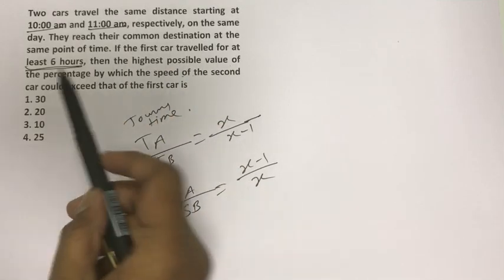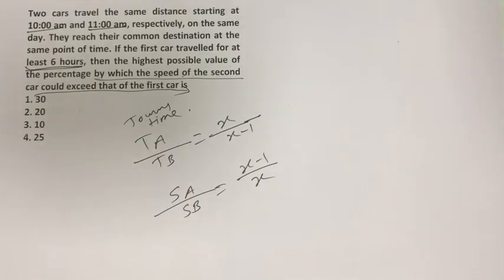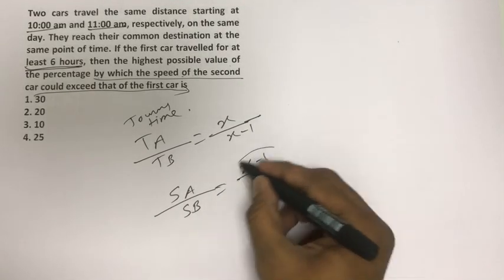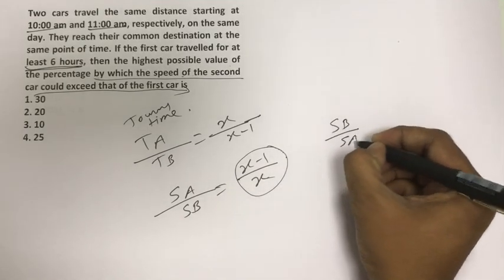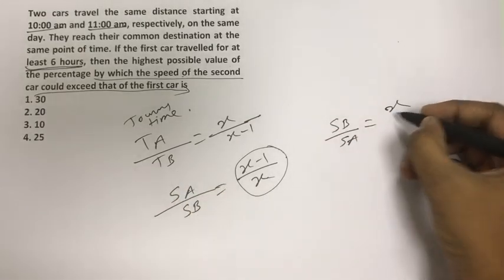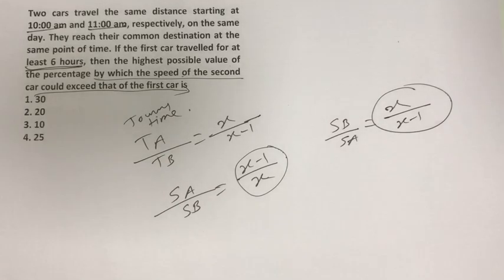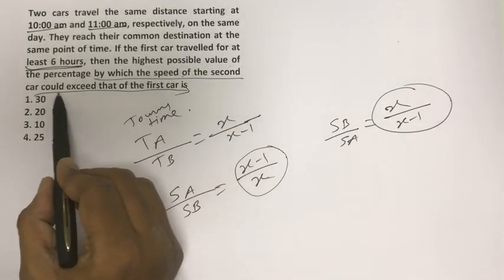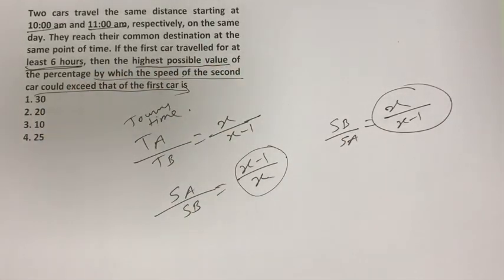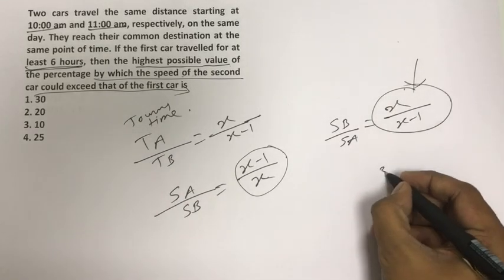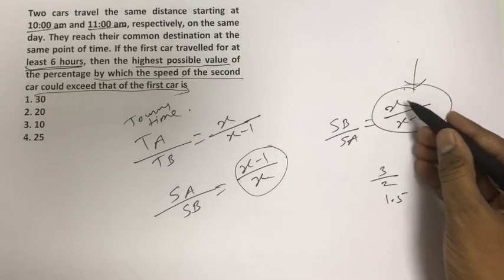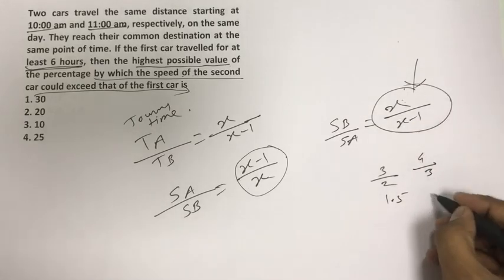What we want is the highest possible value of the percentage by which the speed of the second car could exceed the first. This means speed B divided by speed A - we have to maximize this ratio. If we take x/(x-1), for x=4 it gives 4/3 which is 1.33.